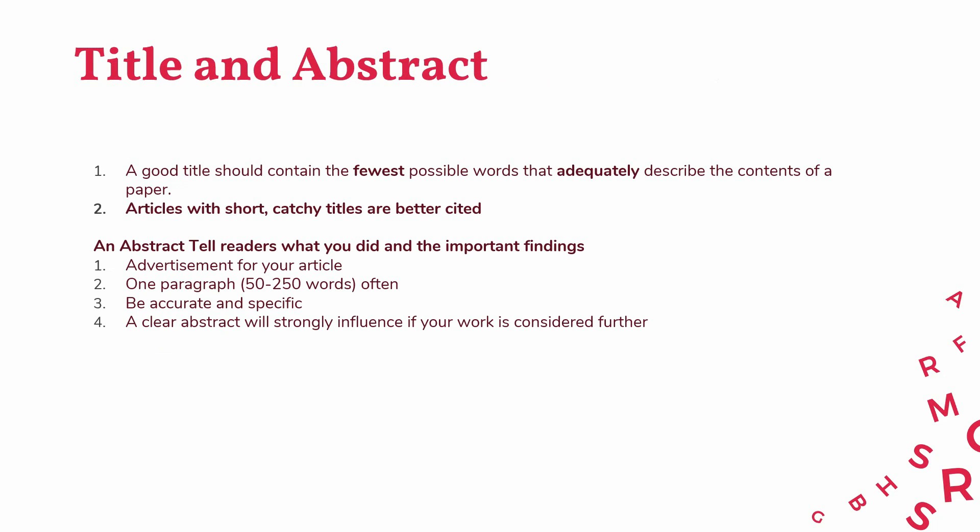The title and abstract: a good title should contain the fewest possible words that adequately describe the contents of a paper. Articles with short, catchy titles are better cited. Your article should be understandable and convey the meaning of what you intend to do in your study. Your abstract is your advertisement — it is the first impression that reviewers have of your writing and your article, and how you sell your article to reviewers and editors. It should be one paragraph, you have to be accurate and very specific, and a clear abstract will strongly influence whether your work is considered further or not.